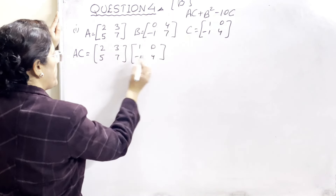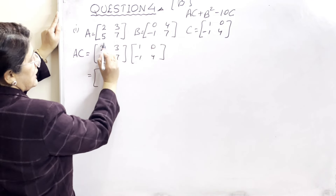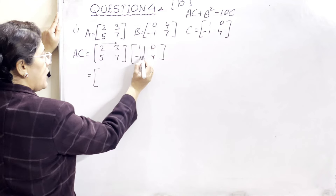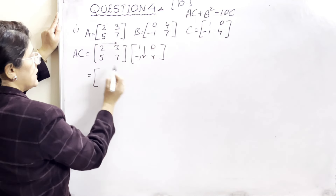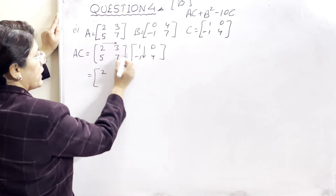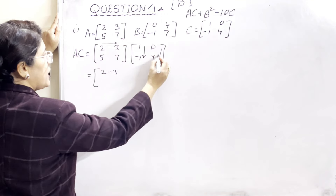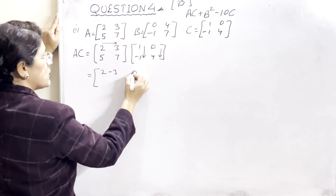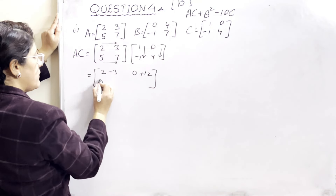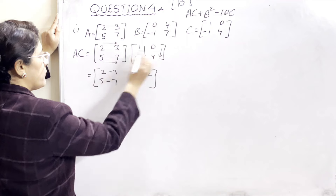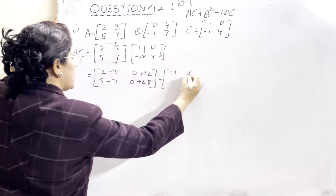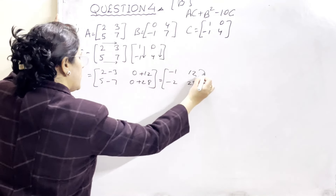Dono humne copy kar diya. Ab iska humne multiply karna hai. Multiply karne ke liye row mein horizontal arrow aur column mein vertical arrow lete hain taaki galti na ho. Pehle number ko pehle element se kiya, 2×2=4, phir 3 ke saath minus 3 aaya. Similarly second column ke saath 2×0=0, aur 4×3=12. Isi tarah second row: 5×5=25 minus 7=-7, phir 5×0=0 aur 7×4=28. Toh answer aayega: -1, 12, -2, aur 28.